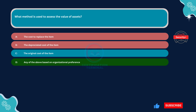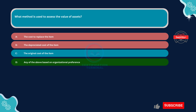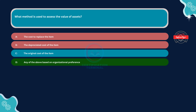Option B, the depreciated cost of the item, is incorrect. While the depreciated cost of an item is commonly used to determine asset value, it may not be the exclusive method used by all organizations. Some organizations may use other valuation methods depending on their accounting principles, industry standards, or specific circumstances.